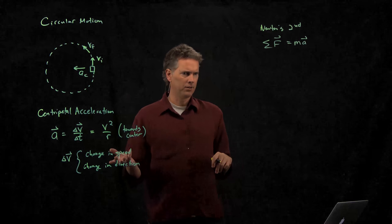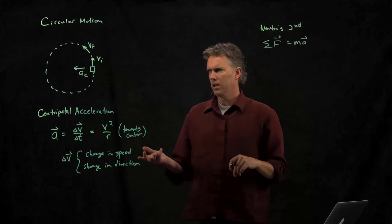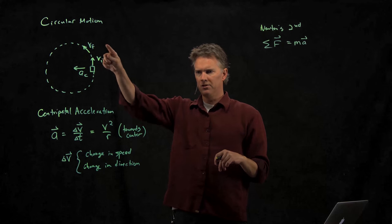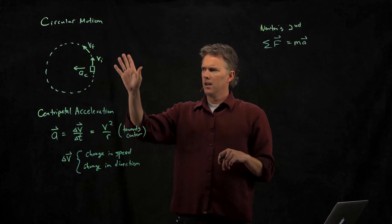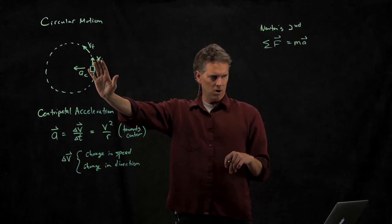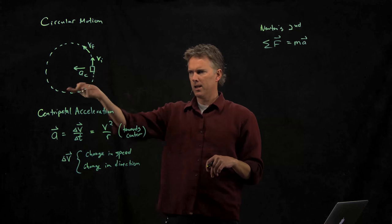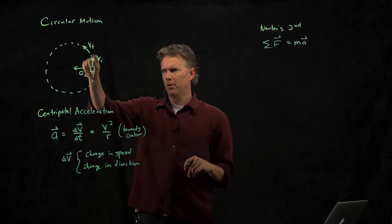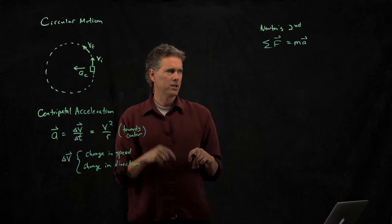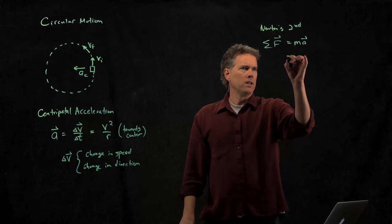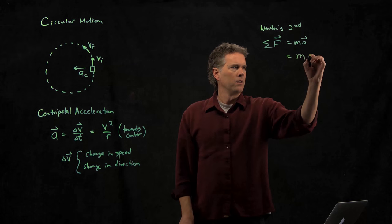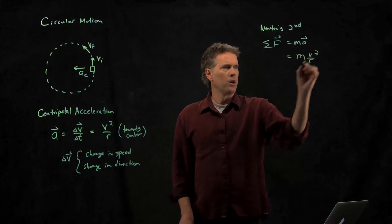Newton's second says the sum of the forces has to be the mass times the acceleration. In this case, there is only one force which is keeping us in the circle. If it was a car on a road, it would be friction. If it's a ball on a string, it would be tension. If it was a person in orbit, it would be gravity.